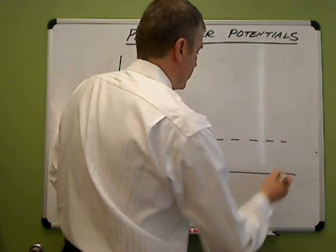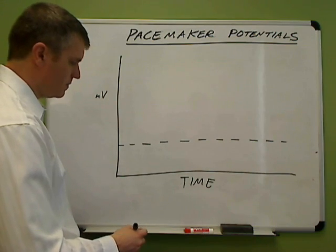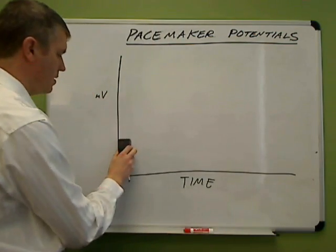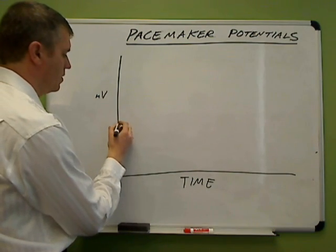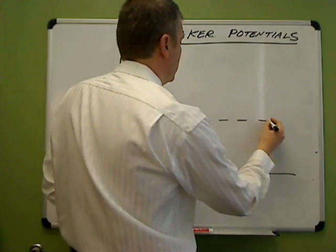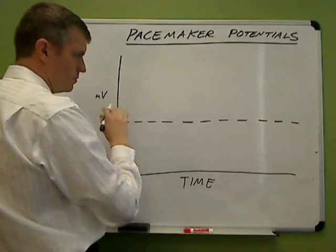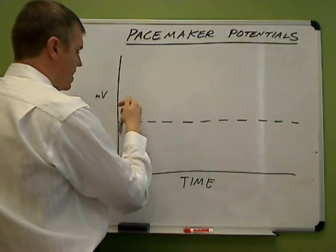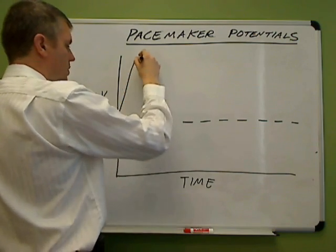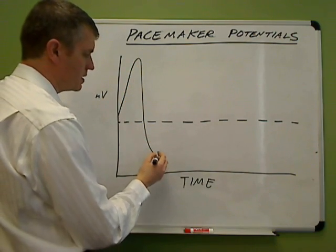Here is threshold as a dotted line, just like last time — actually I should make it higher up. Here's threshold. And let's imagine that a heartbeat just happened, that we depolarize and repolarize the membrane and we're back down here towards resting.